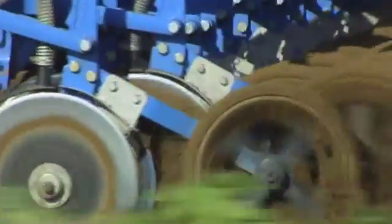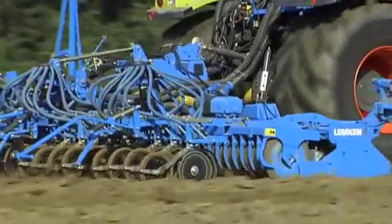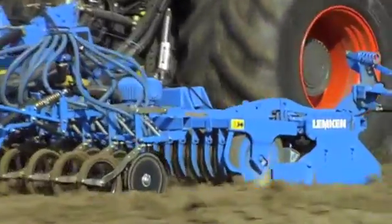The Lemken double disc Coulter system allows a Coulter pressure of up to 35 kg, which ensures accurate and deep seed placement, even in heavy soil.